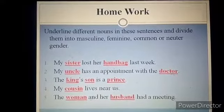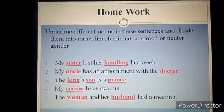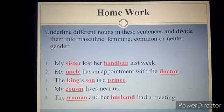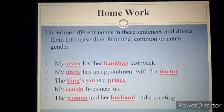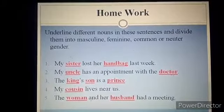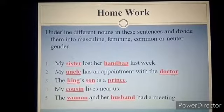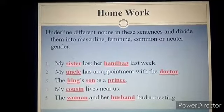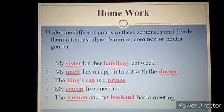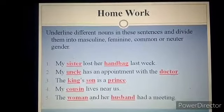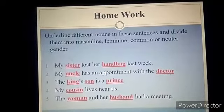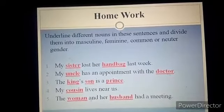Look at the next sentence: 'My cousin lives near us.' The word cousin is common gender because it is used for both female and male. Look at the fifth sentence: 'The woman and her husband had a meeting.' The word woman is feminine and the word husband is masculine. How many marks have you got? Mark your homework for yourself.